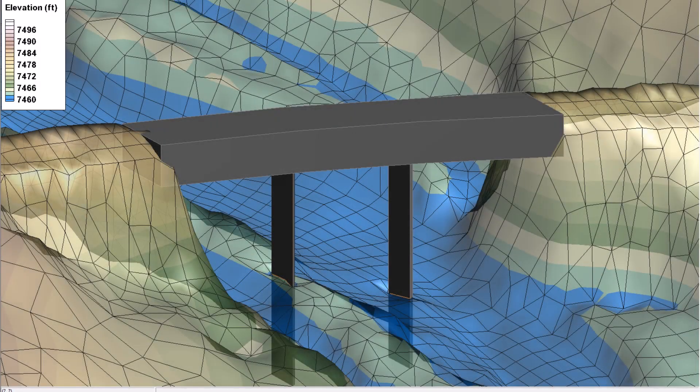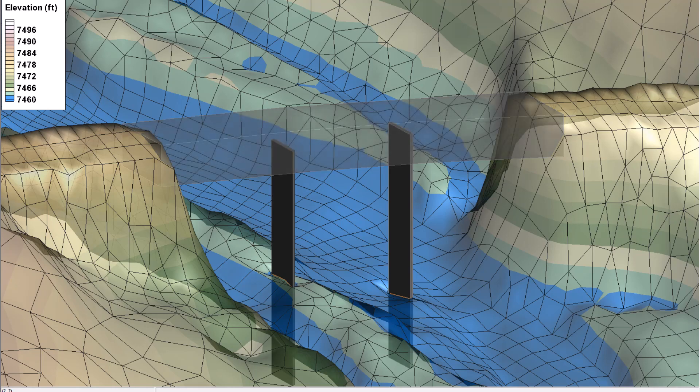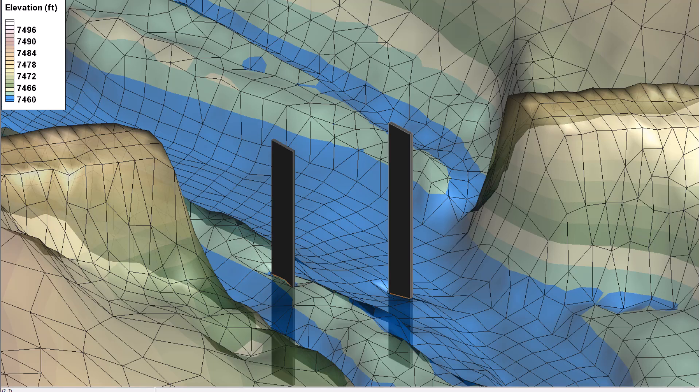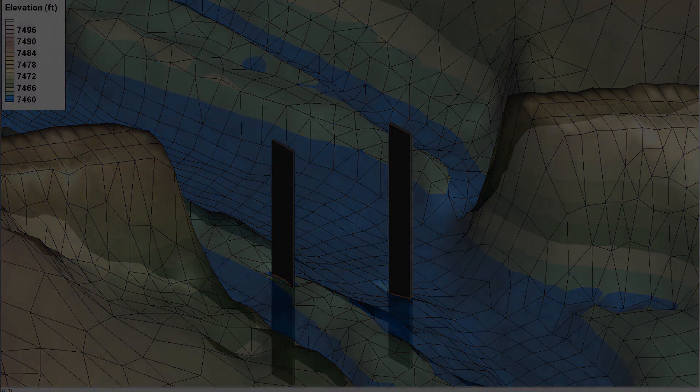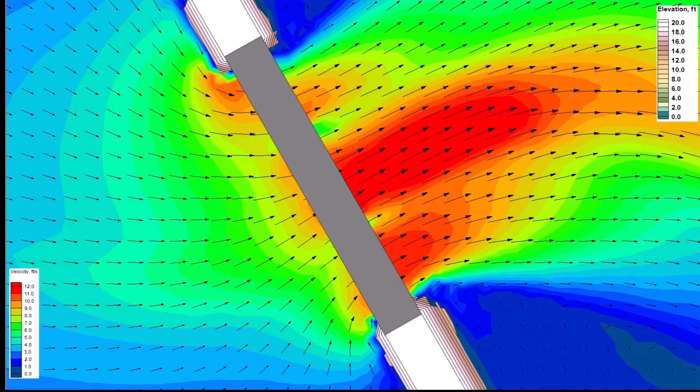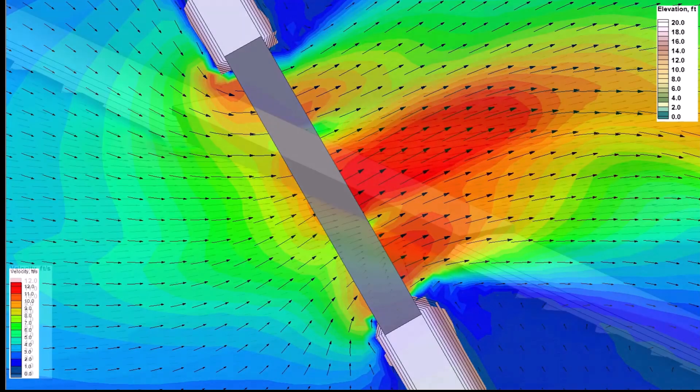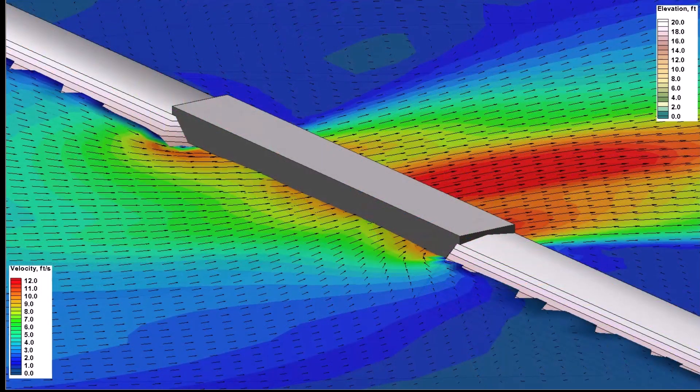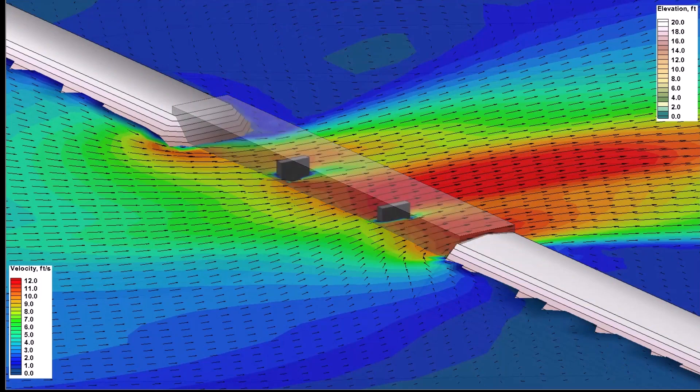Piers can be visualized in SMS using 3D shapes. This representation is only graphical and does not impact hydraulic model results. Visualizing piers as 3D shapes is described in more detail in the 3D bridge video by FHWA.